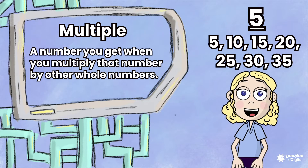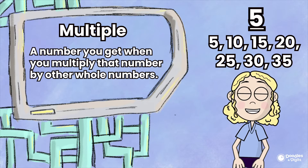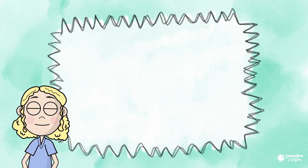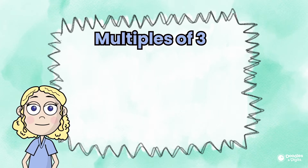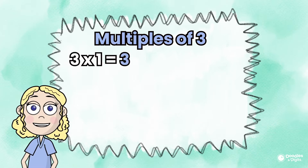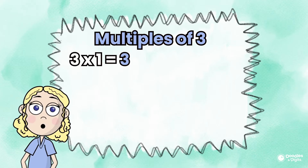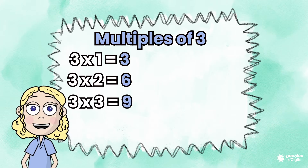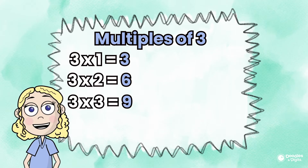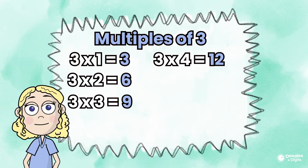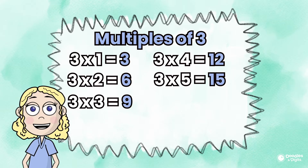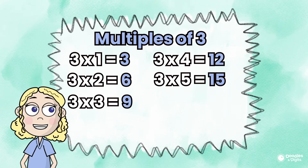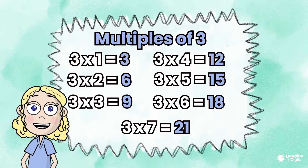There are a few different ways we can find multiples. One way is you can write out multiplication problems. Let's try to find the multiples of 3. 3 times 1 is 3. 3 times 2 is 6. 3 times 3 is 9. 3 times 4 is 12. 3 times 5 is 15. 3 times 6 is 18. And 3 times 7 is 21.